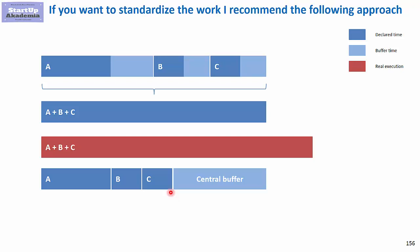So in this way, you get the work done faster and you have a central buffer of time that you can actually use if something unpredictable happens. For example, the scope grows.